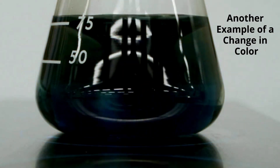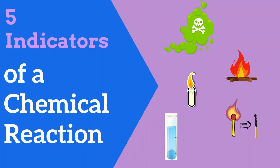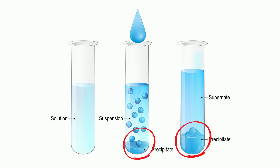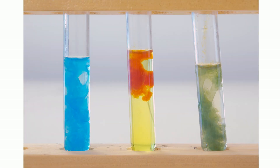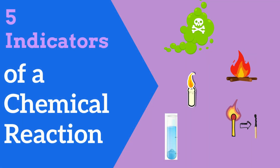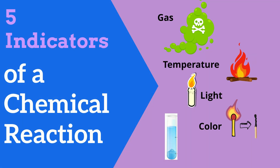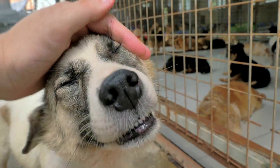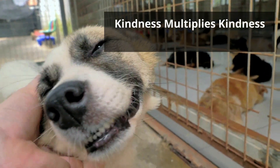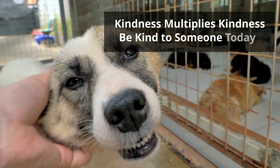And five, a precipitate is formed, which just means a solid is formed, or as sometimes they say, a solid falls out of the solution. So there you go — five indicators that a chemical reaction most likely occurred.